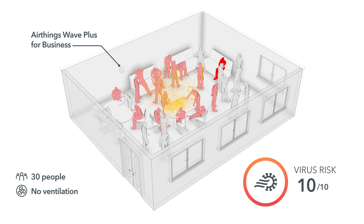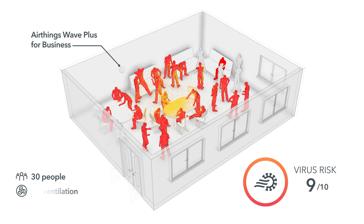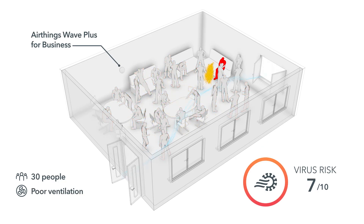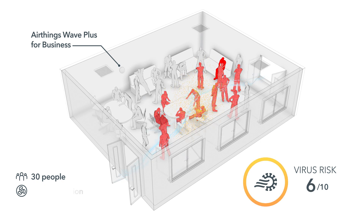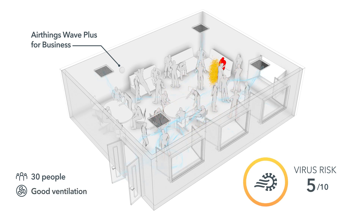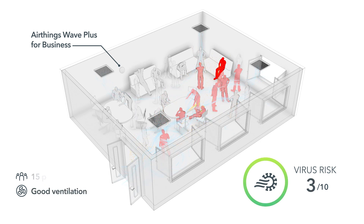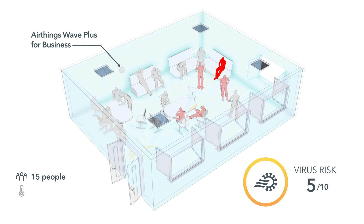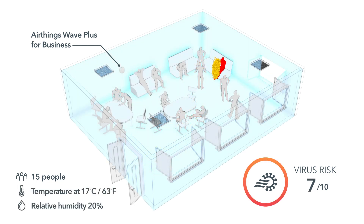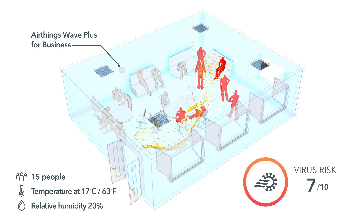Take this average room. Depending on ventilation, the virus risk levels go down. To lower the risk even more, you can lower the number of people in the space. Low relative humidity and low temperatures affect the body's defenses, as well as spread the virus.